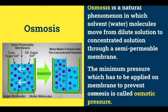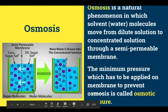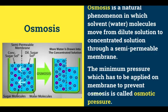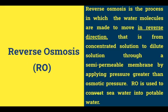A semi-permeable membrane allows only movement of certain selected ions or molecules through it. The minimum pressure which has to be applied on the membrane to prevent osmosis is called osmotic pressure. Now let us come to reverse osmosis.